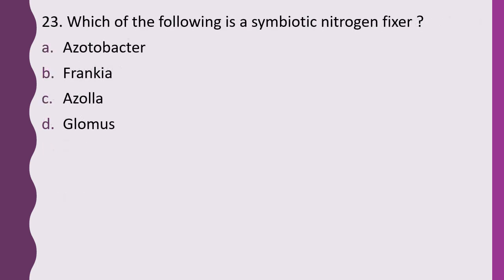Question 23. Which of the following is a symbiotic nitrogen fixer? Azotobacter, Frankia, Azolla, or Glomus. The correct answer is option B, Frankia.